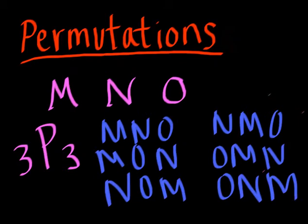Let's count them. We could make MNO, MON, NOM, NMO, OMN, or ONM. That's six ways. So three permutations of three is equal to six.